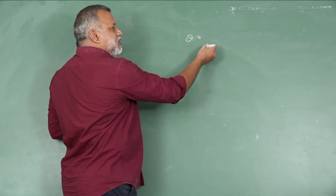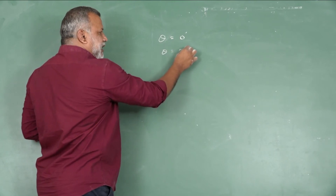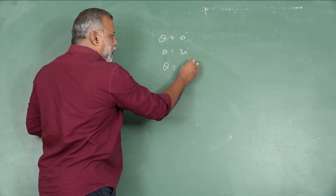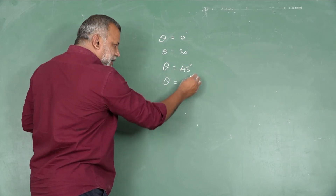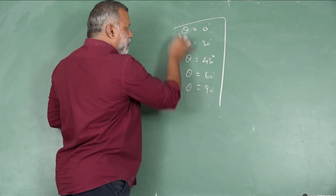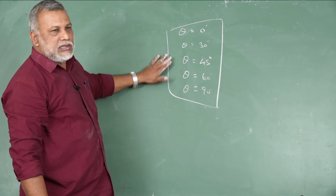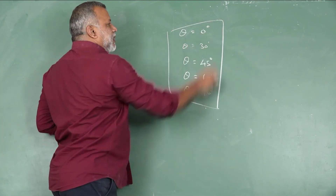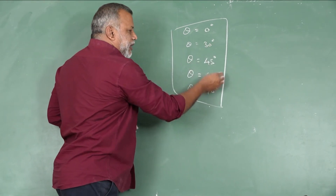In your 10th standard syllabus, you used some standard results for fixed values of θ: 0°, 30°, 45°, 60°, and 90°. For all these fixed angles you have already worked out the values, and for these specific angles you can verify the identities.